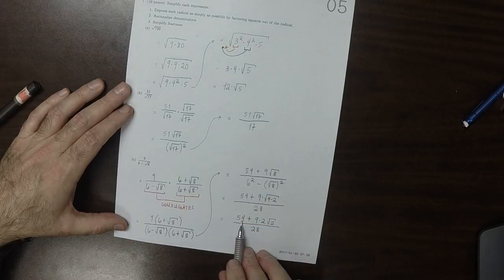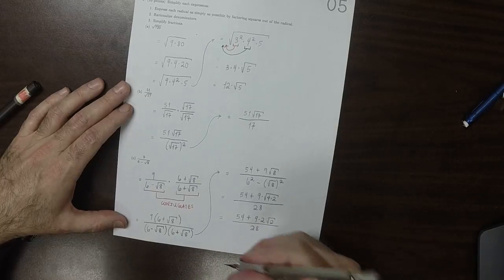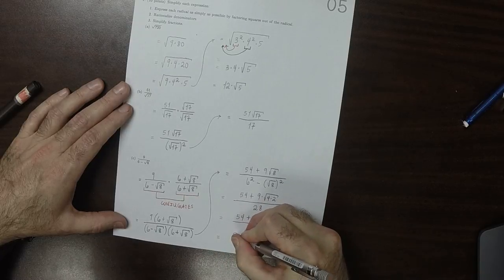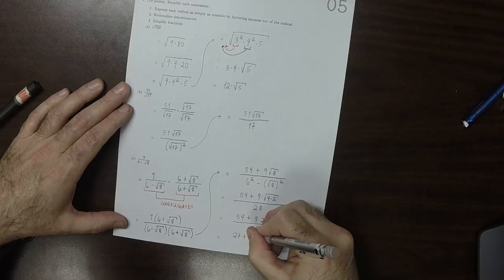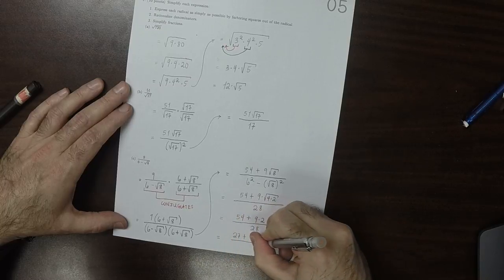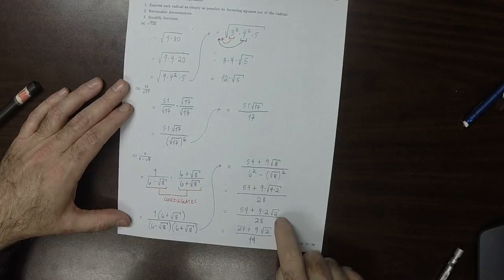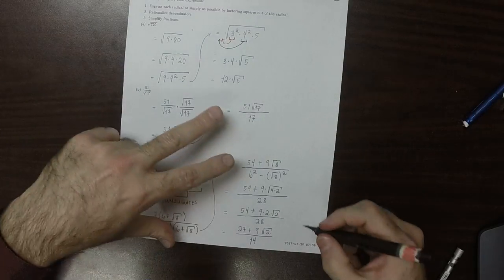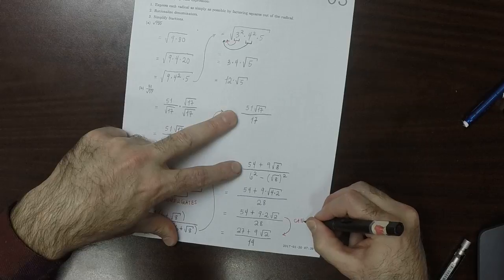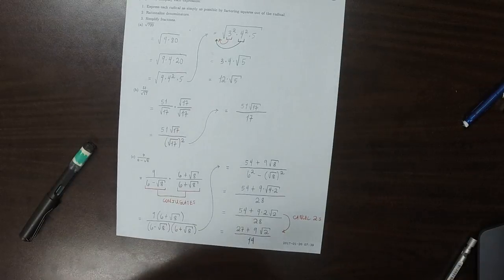And then now, 54 has a factor of 2, that has a factor of 2, this has a factor of 2. So, half of 54, that's 27. So 27 plus 9 square root 2 over 14. Canceling 2s. And that's the answer.